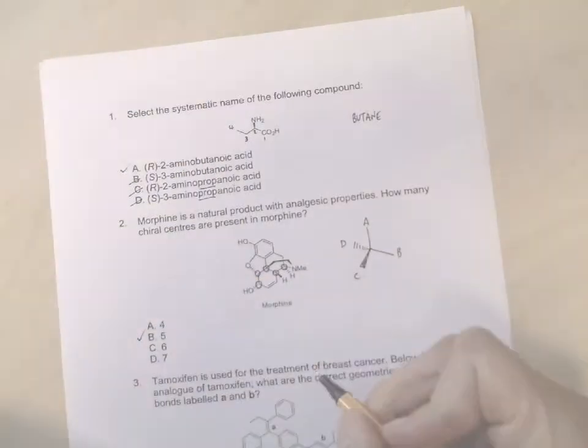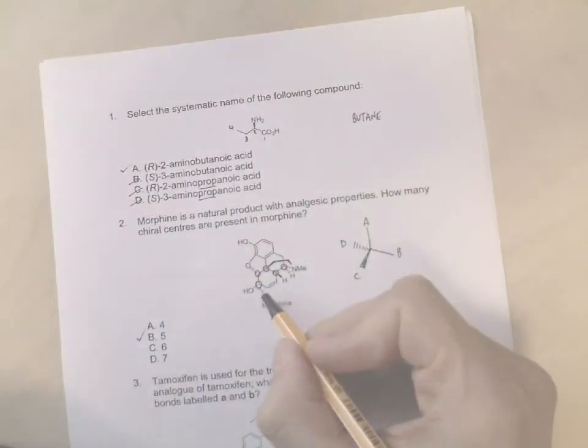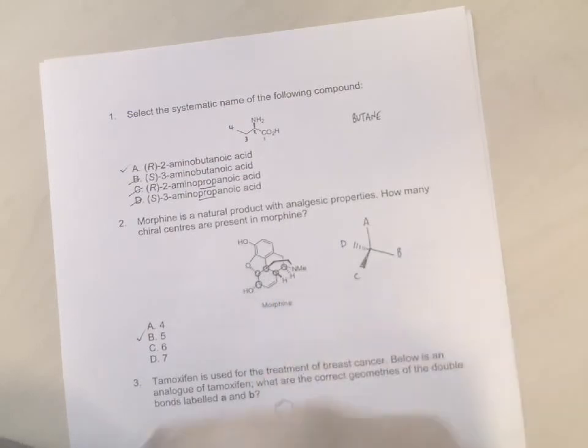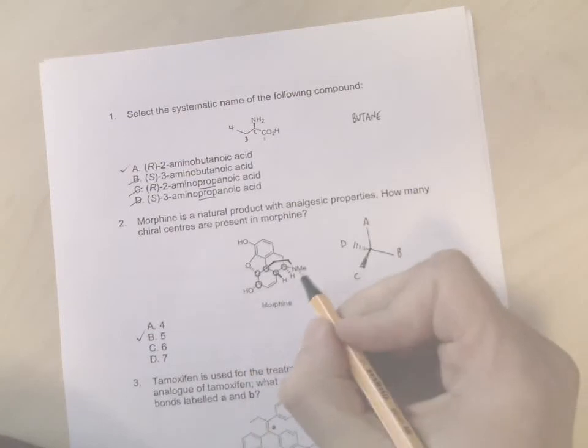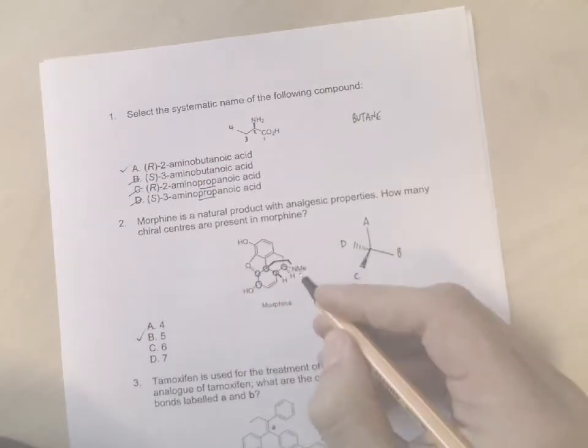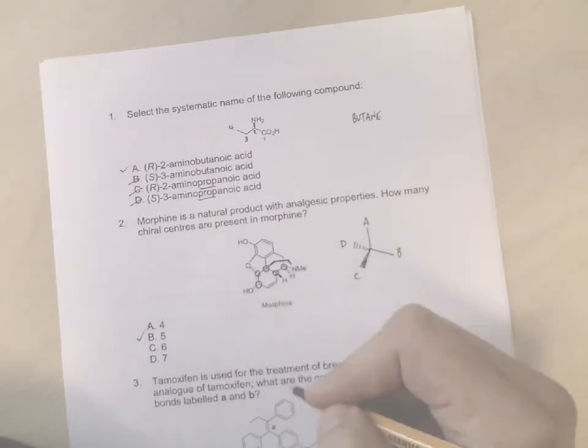So here the answer is B. Now for your own revision purposes, you should go through and make sure that each of the carbons I've circled here have four different groups on them. Notice I haven't circled the nitrogen because nitrogen isn't chiral here. So we only circle the carbons and there's five of them.